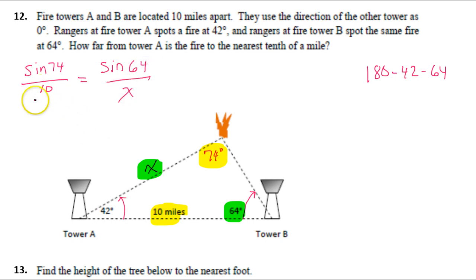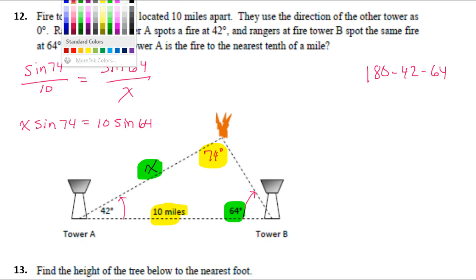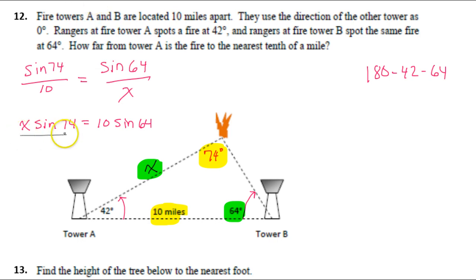Let us cross multiply to move forward with this equation. I'm going to have X sine 74 is equal to 10 sine 64. To get X by itself, I will need to divide both sides by sine 74. So these will cancel out, and that should give me the distance that I was looking for.